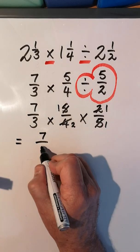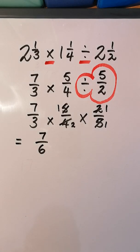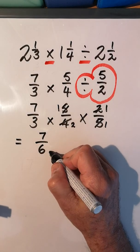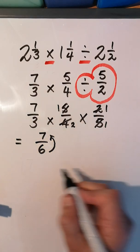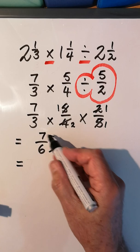And our final answer: how many 6s are there in 7? How many times can 6 go into 7? Once. What's left over? 1, over the same denominator. And there we go.